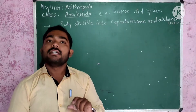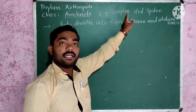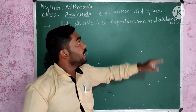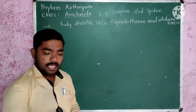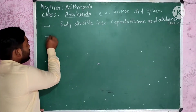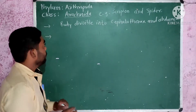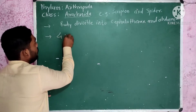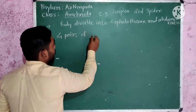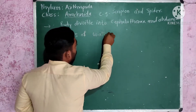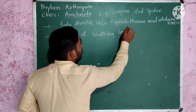The abdomen is the last part. But in a scorpion it is elongated, and in spider it is very much reduced. They have four pairs of walking legs.